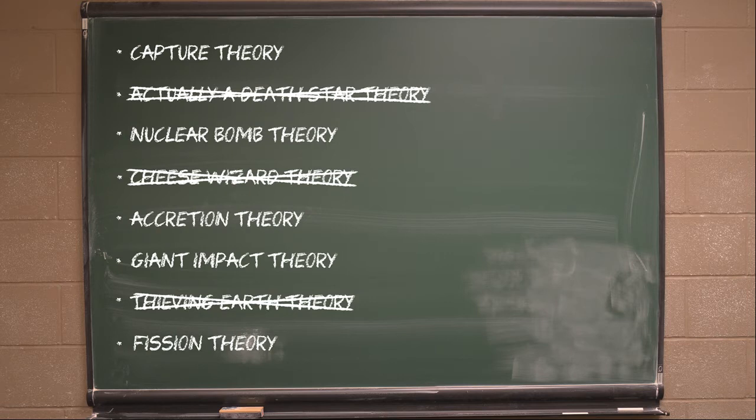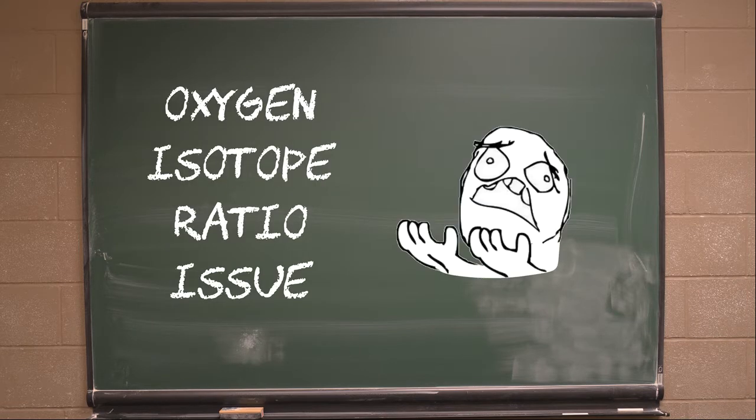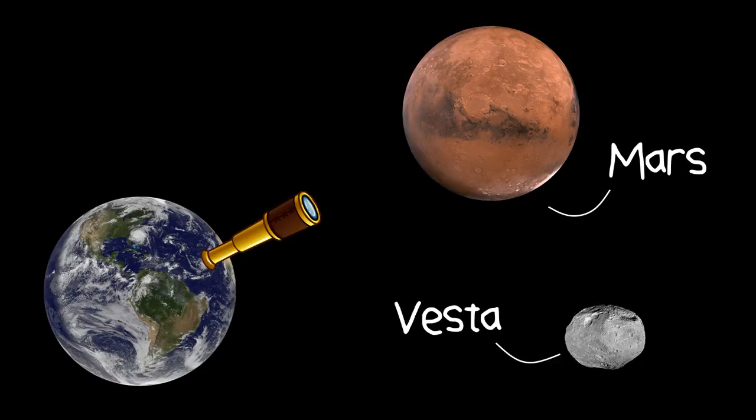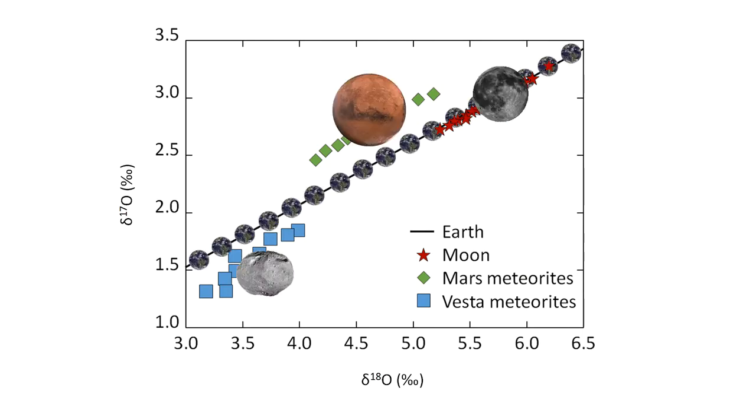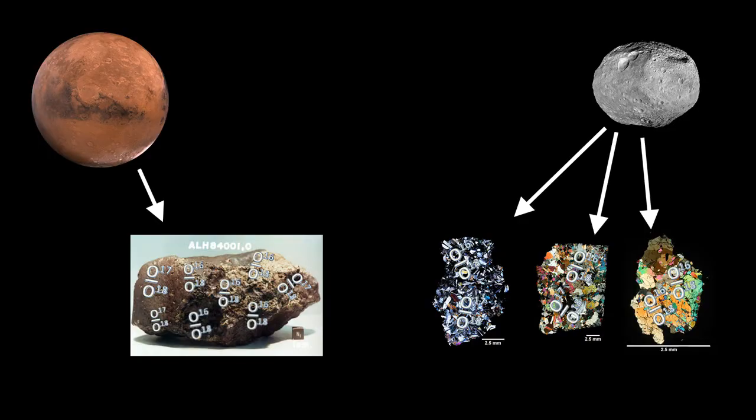But it's not just the iffy dynamics that debunk the capture theory. There is also the oxygen isotope ratio issue, an annoying little problem that keeps cropping up whenever we're trying to explain where the Moon came from. As far as we can tell, looking at Mars and an asteroid called Vesta, each body in the solar system has a unique oxygen isotope ratio that essentially acts as a fingerprint.